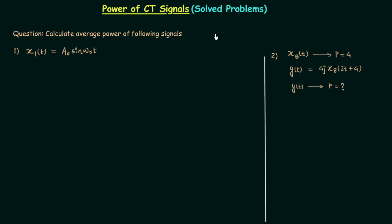In the previous lecture we saw what power signals are and we already know how to calculate the average power of continuous time signals. In this lecture, which is part 1 of solved problems based on power of continuous time signals, we will solve two questions which you can see on your screen and discuss what will happen to the average power on performing different operations.